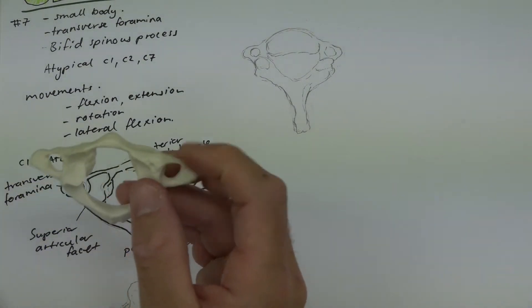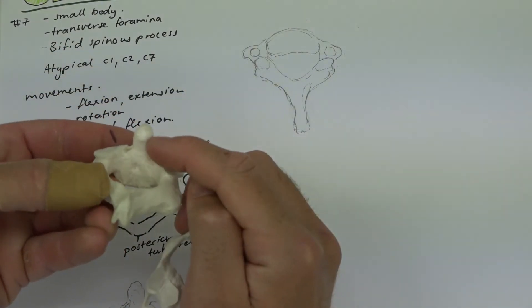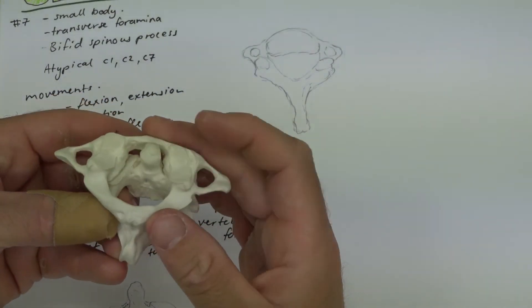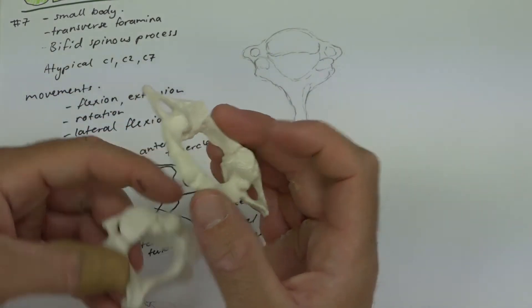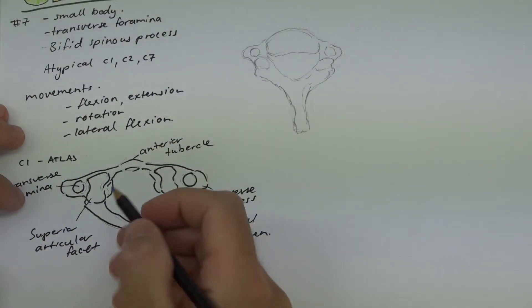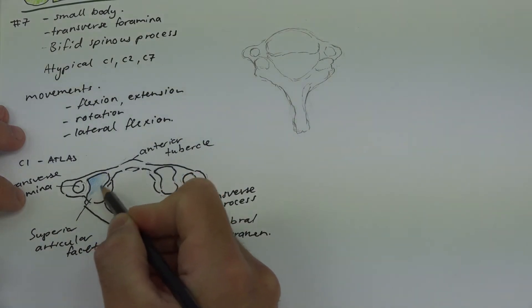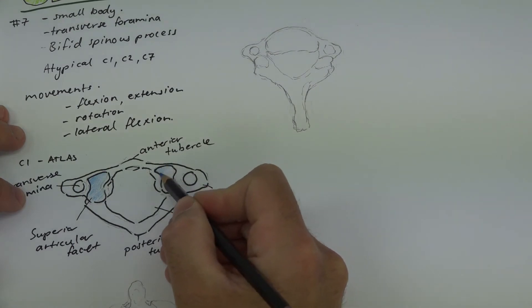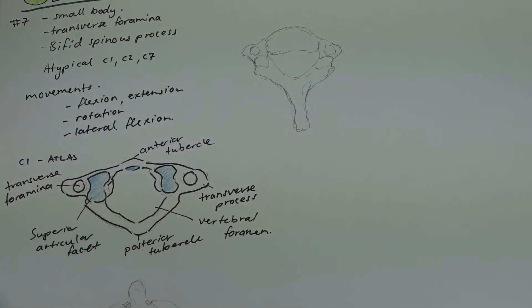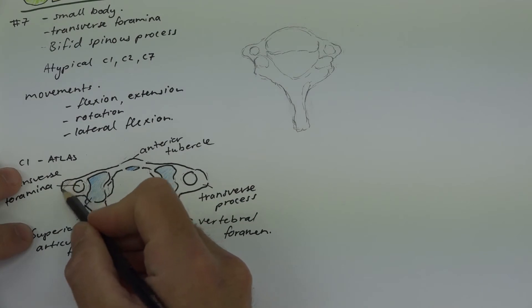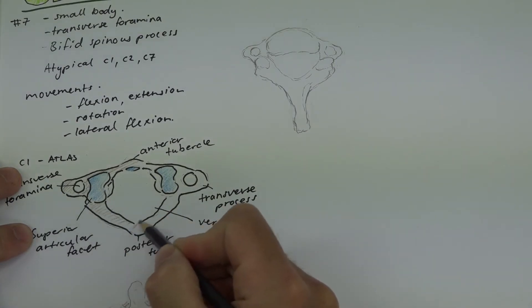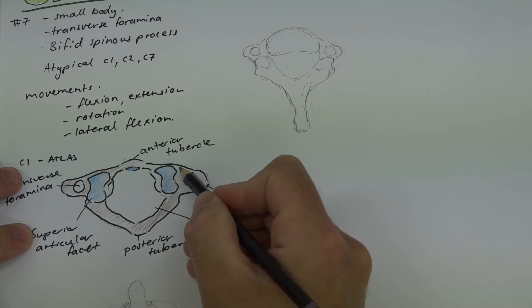There is also an articular facet for the dens. When we put C1 and C2 together, the dens actually articulates with the inner aspect of the vertebral foramen of C1. The articular facets are shaded blue to represent areas where hyaline cartilage would lie, indicating articulations between bones, while the rest of the bone is non-articular.